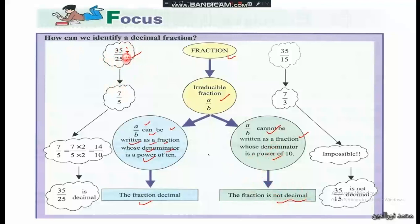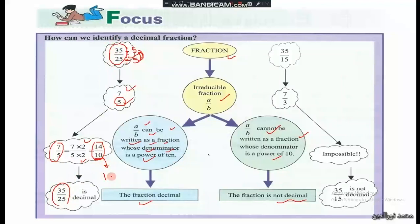For example, thirty-five over twenty-five: we divide by the common divisor five, giving seven over five. Since five can be written as a power of ten by multiplying by two — giving fourteen over ten — the denominator is a power of ten. So thirty-five over twenty-five is a decimal fraction, equal to one point four (one zero means one decimal digit).